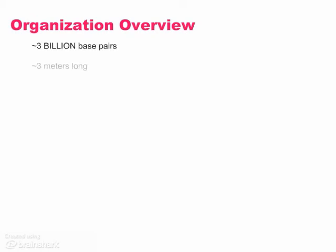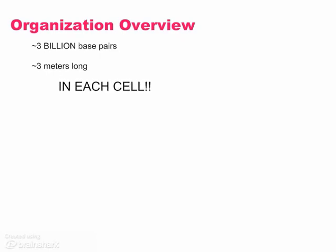It's a lot of material that we have to keep organized. In a human cell, we're talking about about 3 billion base pairs, which works out to be about 3 meters long inside of each cell. That's an awful lot of material that we have to cram into each one of those 10 trillion cells.